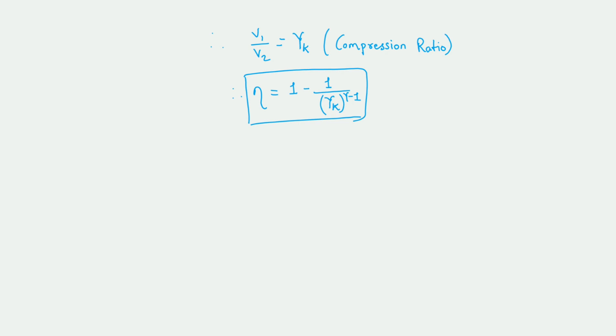The relationship between efficiency and compression ratio in the Otto cycle is represented by this efficiency equation. As the compression ratio increases, the thermal efficiency of the engine also increases. Thank you.